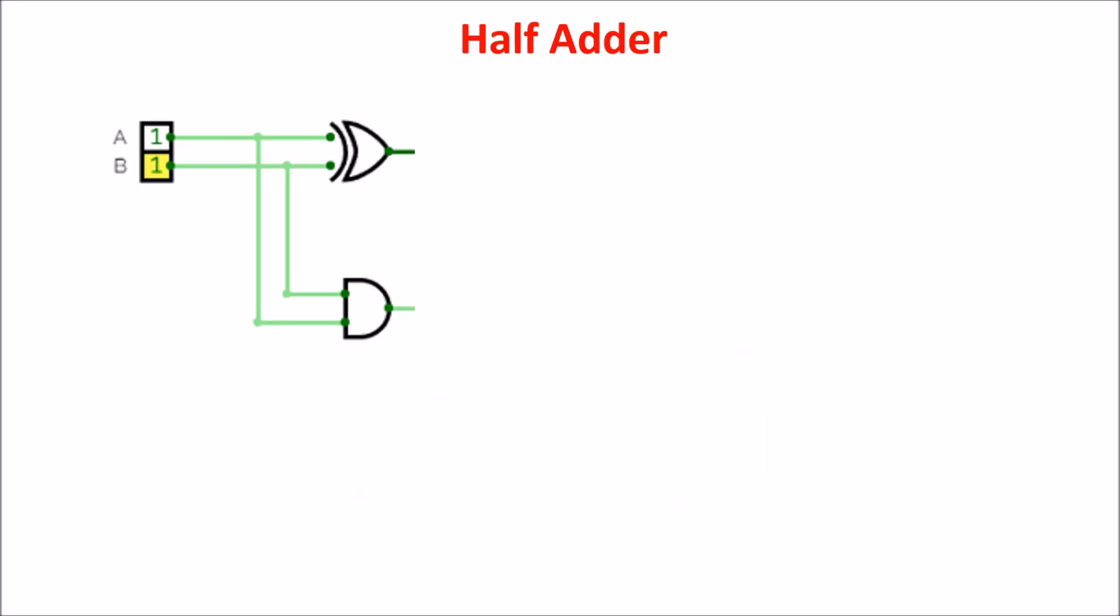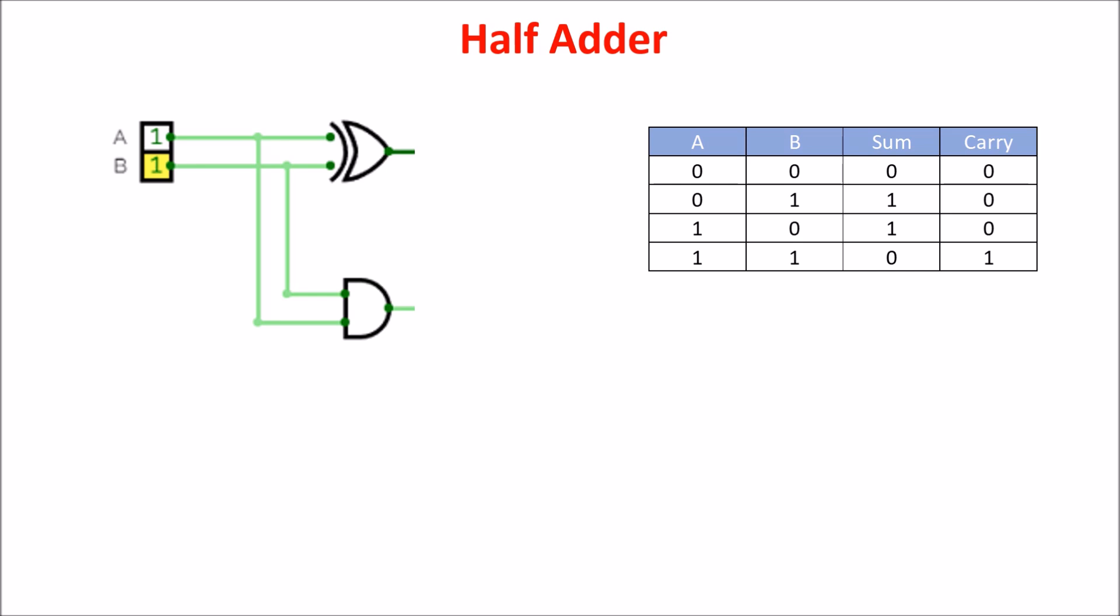First of all, let's see the half adder which we add two bits with. We use a XOR gate for the sum plus an AND gate for the carry. This is the truth table of the half adder.